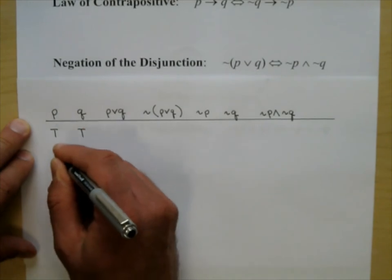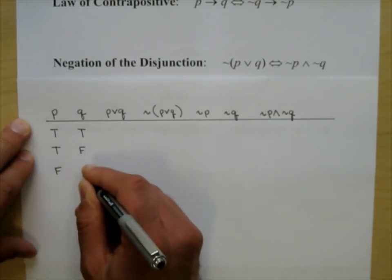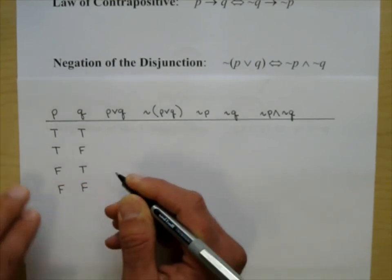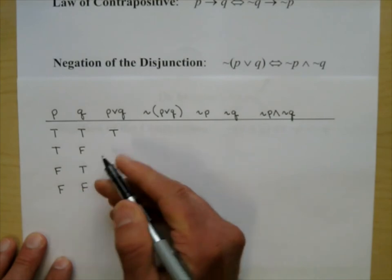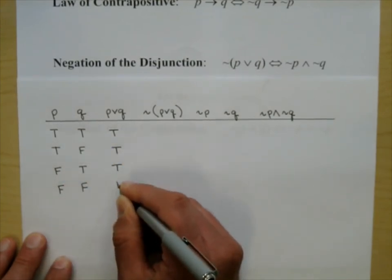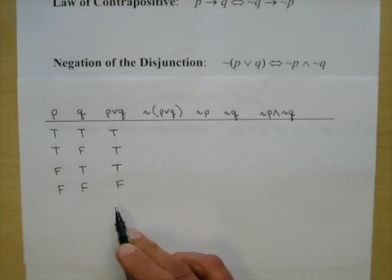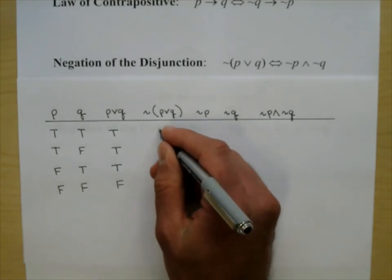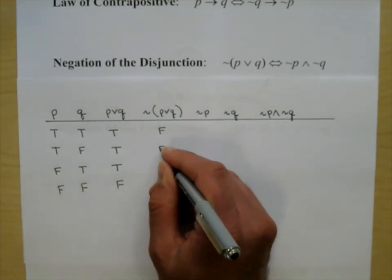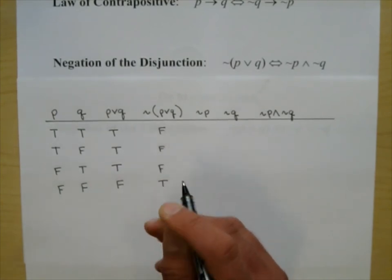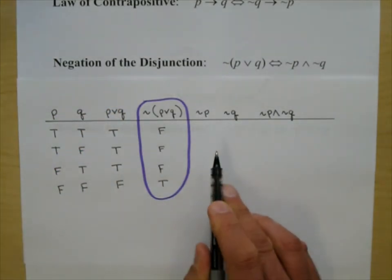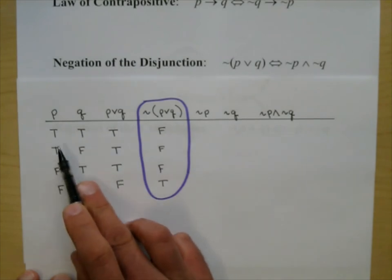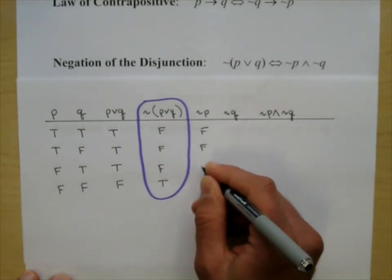The negation of that column is false, false, false, true. Now building not-P: false, false, true, true. And not-Q: false, true, false, true.